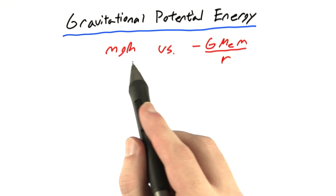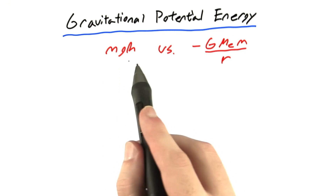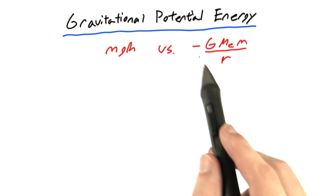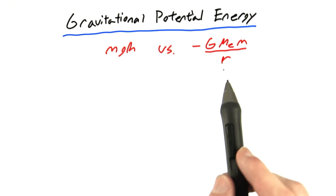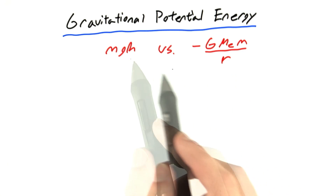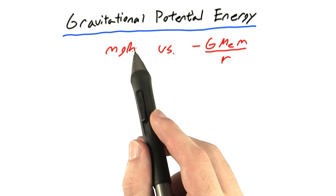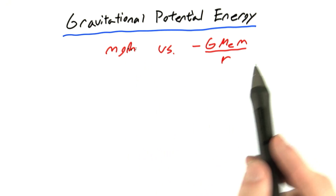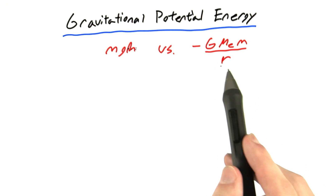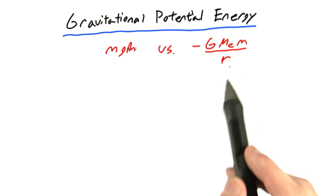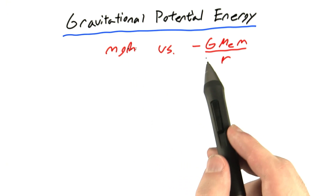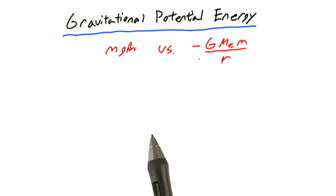So up to this point, we've been using mgh for gravitational potential energy. But in the previous video, I discussed how this formula is actually more accurate. But it's strange because these formulas actually look quite different. For example, the distance away from the ground, h, is in the numerator, whereas in this equation, the distance away from the center of the earth, r, is in the denominator. That seems awfully strange. And this one is positive and this one's negative. There are quite a few differences.